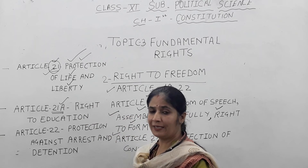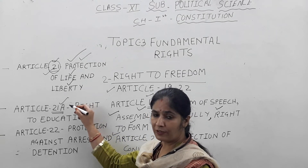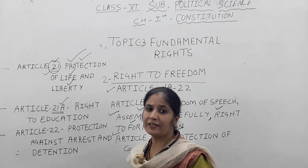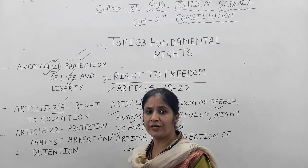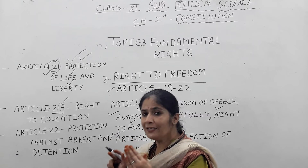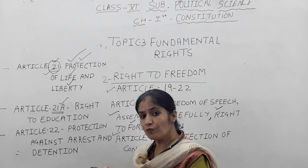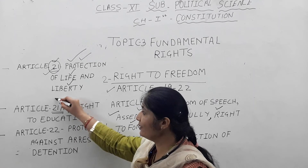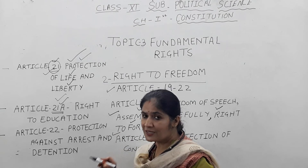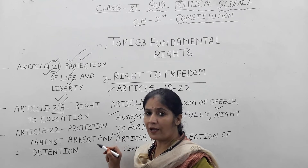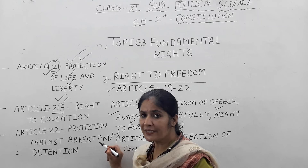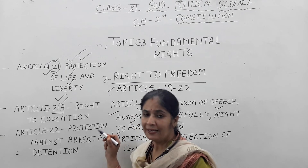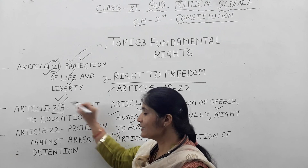Article number 21A is connected with article number 21 and was included in fundamental rights after some time. Article 21A provides the right to education for the age group of 6 to 14 years. Children in this age group have the right to free and compulsory education. They can get admissions in government schools under the free and compulsory education act passed by the government of India.